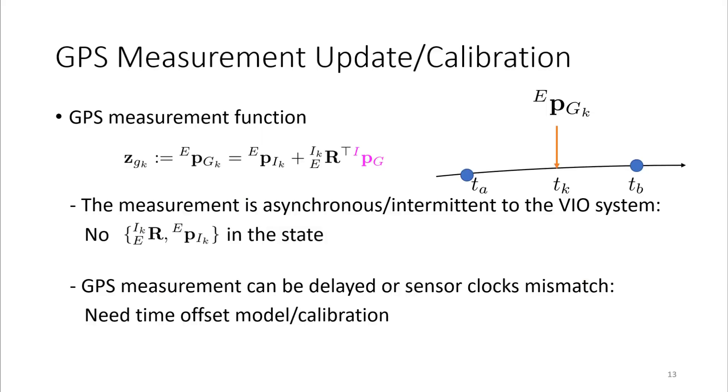Now, let's talk about how to handle the asynchronicity and intermittency of GPS measurement. Since we have IMU poses in the state at camera imaging time, generally we do not have exact IMU poses at the time we get GPS measurement. Also, the original measurement function does not model the time offset which can be caused by sensor delay or clock mismatch.